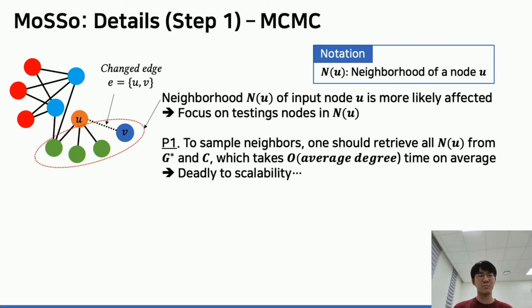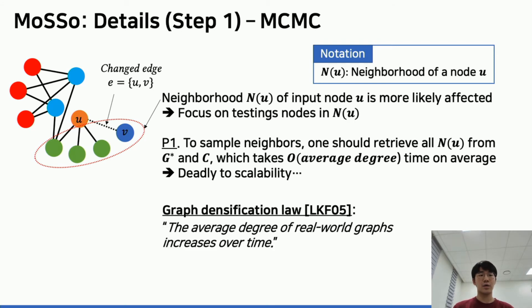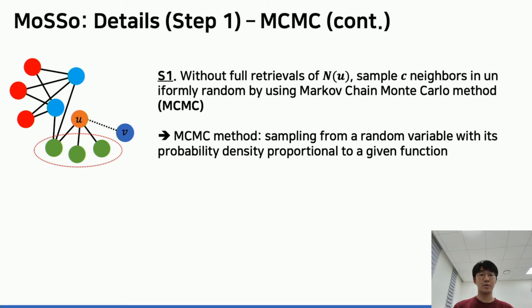However, this is deadly to scalability because the graph densification law says that the average degree of real-world graphs increases over time. To deal with this issue, we devise an unbiased sampling method without full retrieval. We use a Markov chain Monte Carlo method, MCMC for short. The MCMC method enables us to create samples from a target random variable.